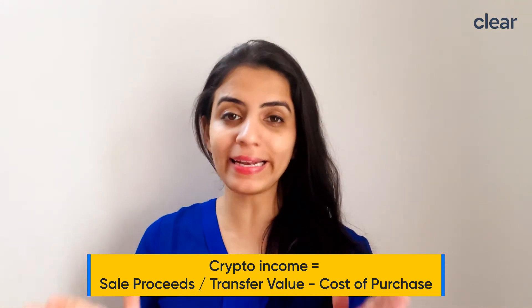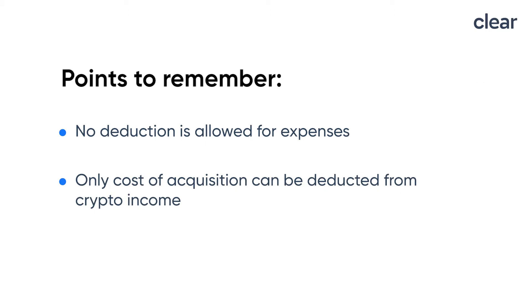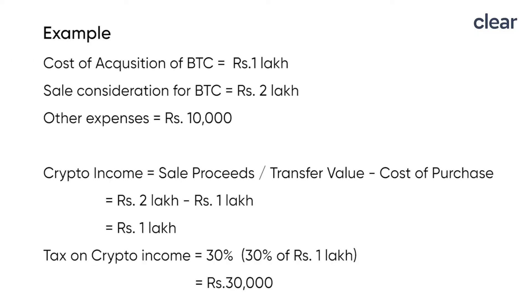Remember, no expense or deduction is allowed from crypto income except the cost of acquisition. For example, suppose you purchased Bitcoin worth ₹1 lakh and sold it for ₹2 lakh, and incurred ₹10,000 as expenses such as exchange fees, interest paid on borrowed capital, or electricity charges. You will pay 30% tax on ₹2 lakh minus ₹1 lakh — that is, your net profit of ₹1 lakh — resulting in a tax liability of ₹30,000. You will not get any deduction for expenditure incurred to earn this crypto income.